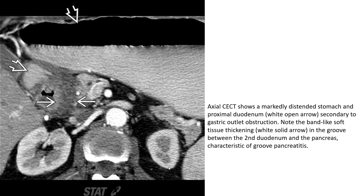Axial contrast-enhanced CT shows markedly dilated stomach and proximal duodenum — indicated by the wide open arrow — secondary to gastric outlet obstruction. Note the band-like soft tissue thickening — wide solid arrow — in the groove between the second duodenum and the pancreas, characteristic of groove pancreatitis.